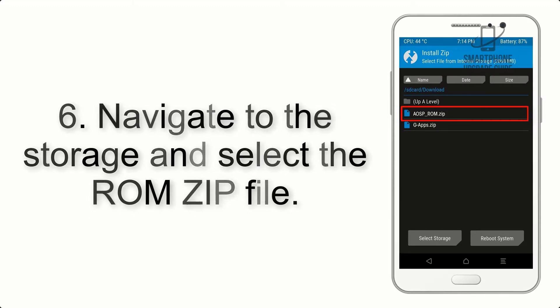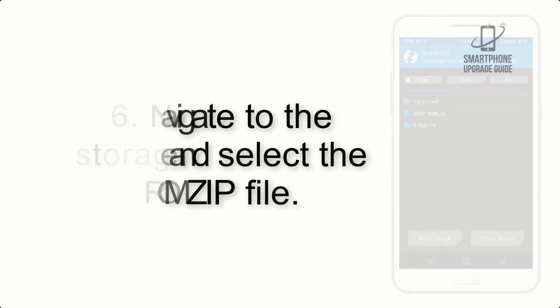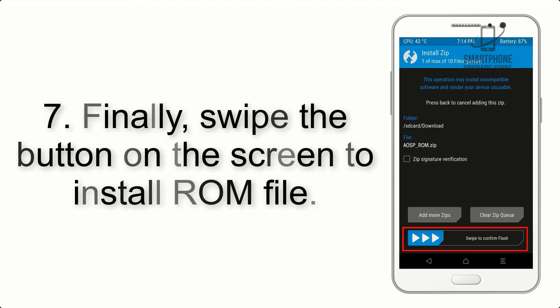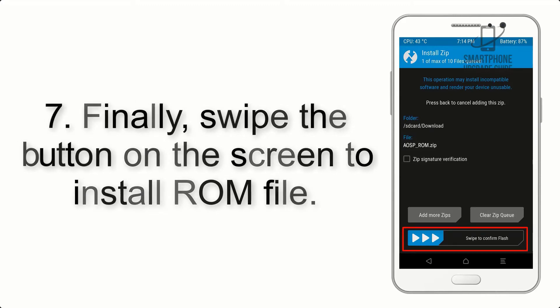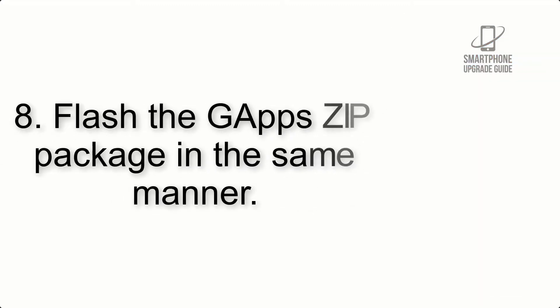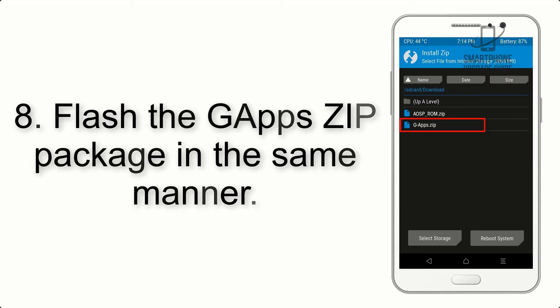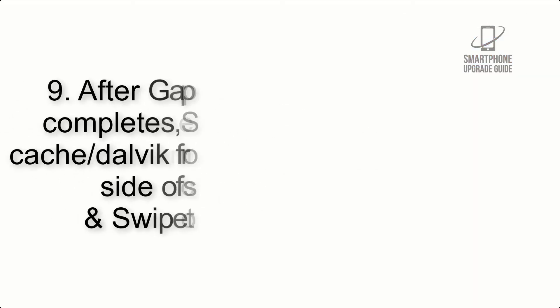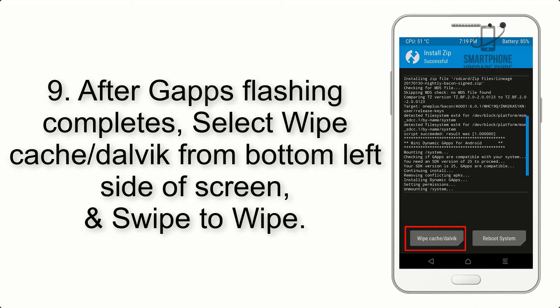Step 6: Navigate to the storage and select the ROM zip file. Step 7: Swipe the button on the screen to install the ROM file. Step 8: Flash the gapps zip package in the same manner.